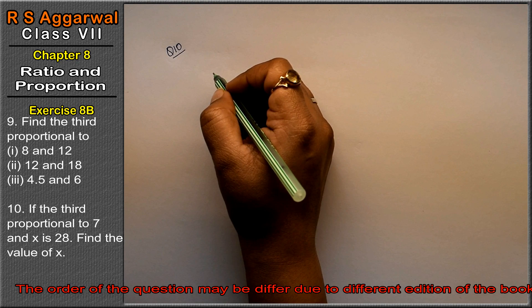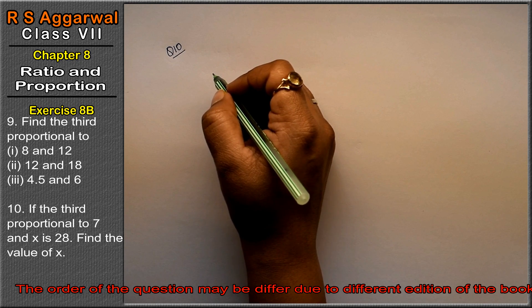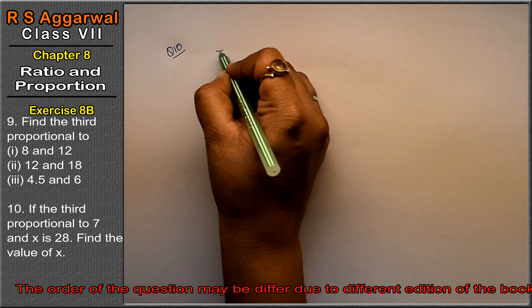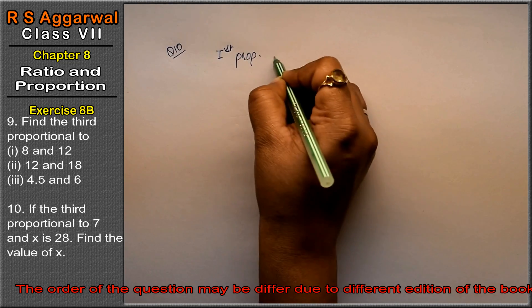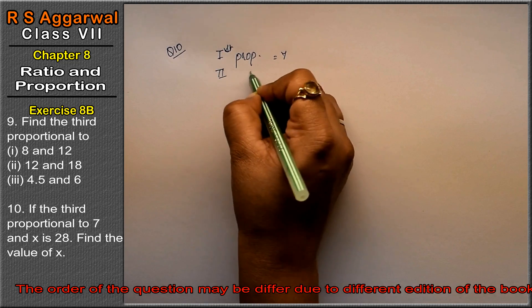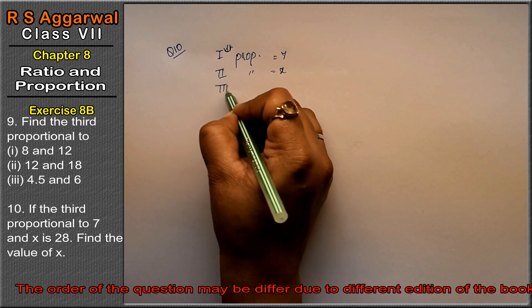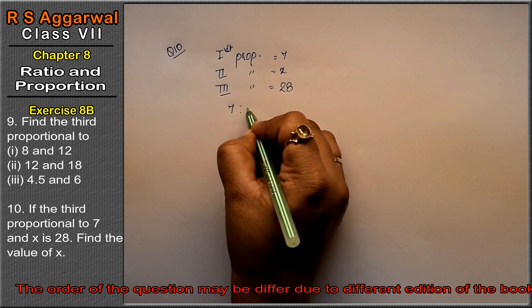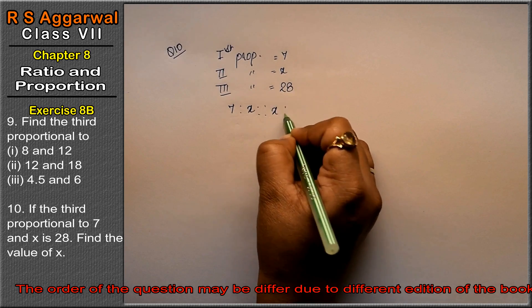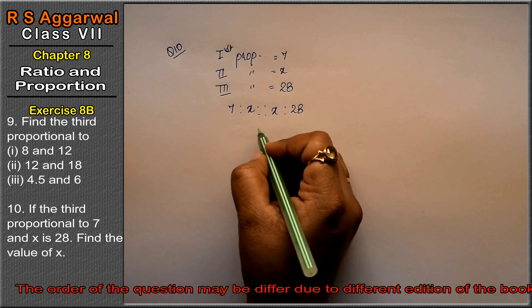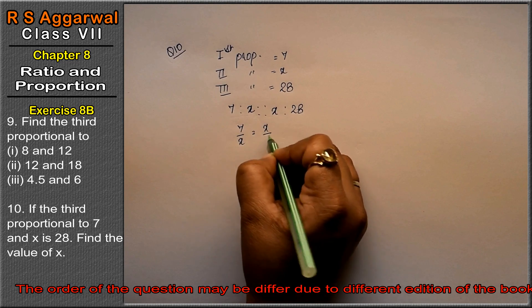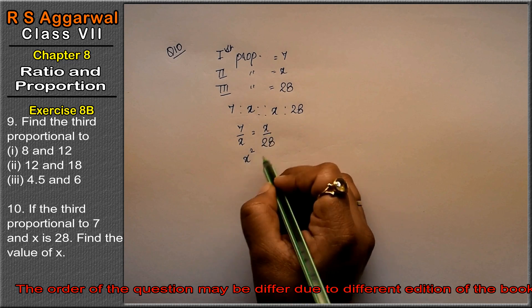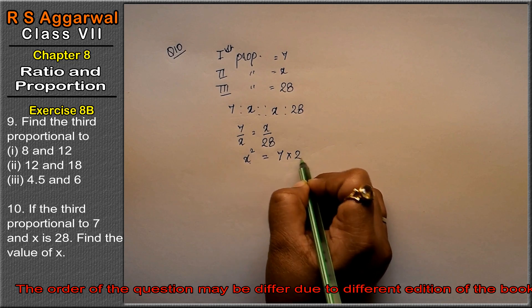Question number 10 is if the third proportional to 7 and x is 28. Third proportion - first proportion is 7, second is x, and third proportion is 28. So how did we do it? First proportion divided by second proportion equals second proportion divided by third proportion. So how do we write it? 7 upon x equals to x upon 28. So x into x is x squared equals to 7 into 28. So how much is it?